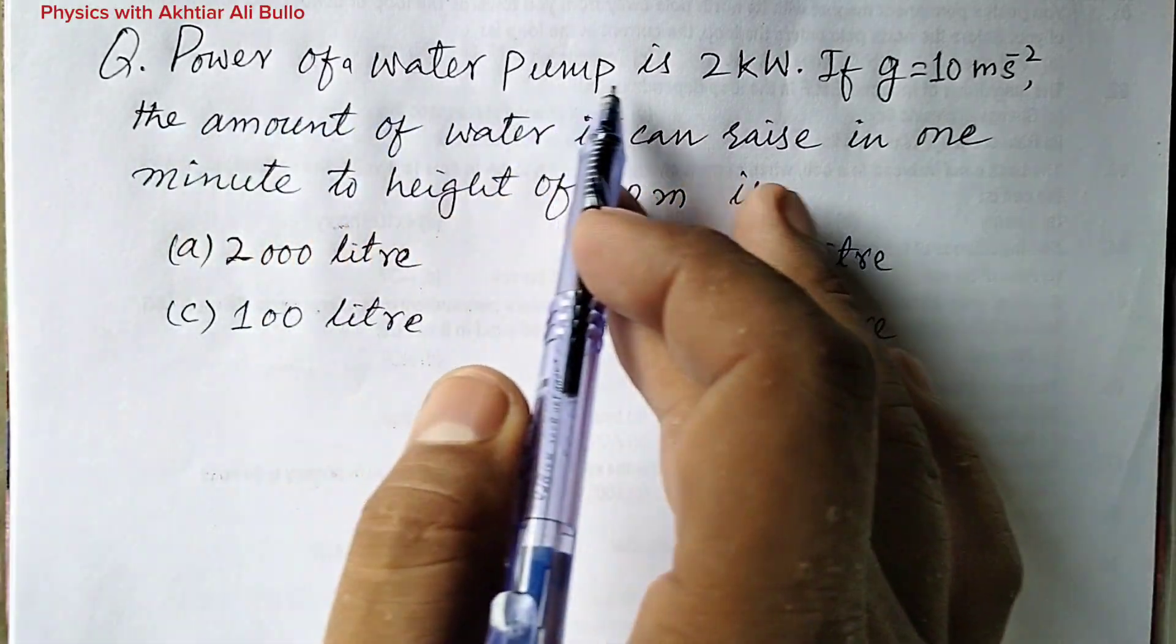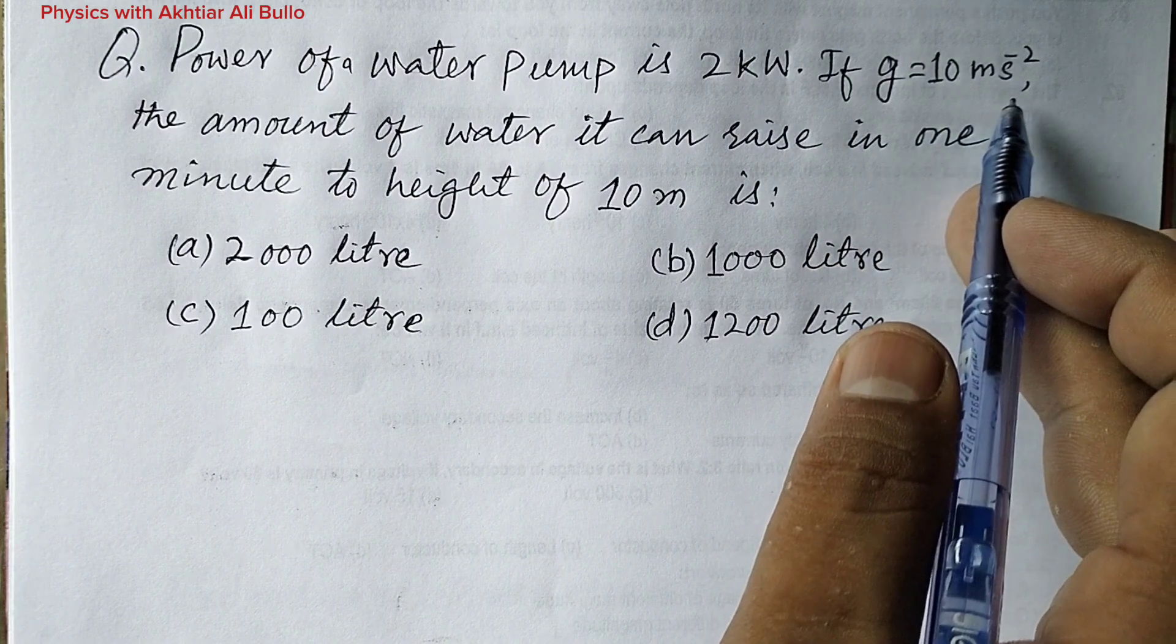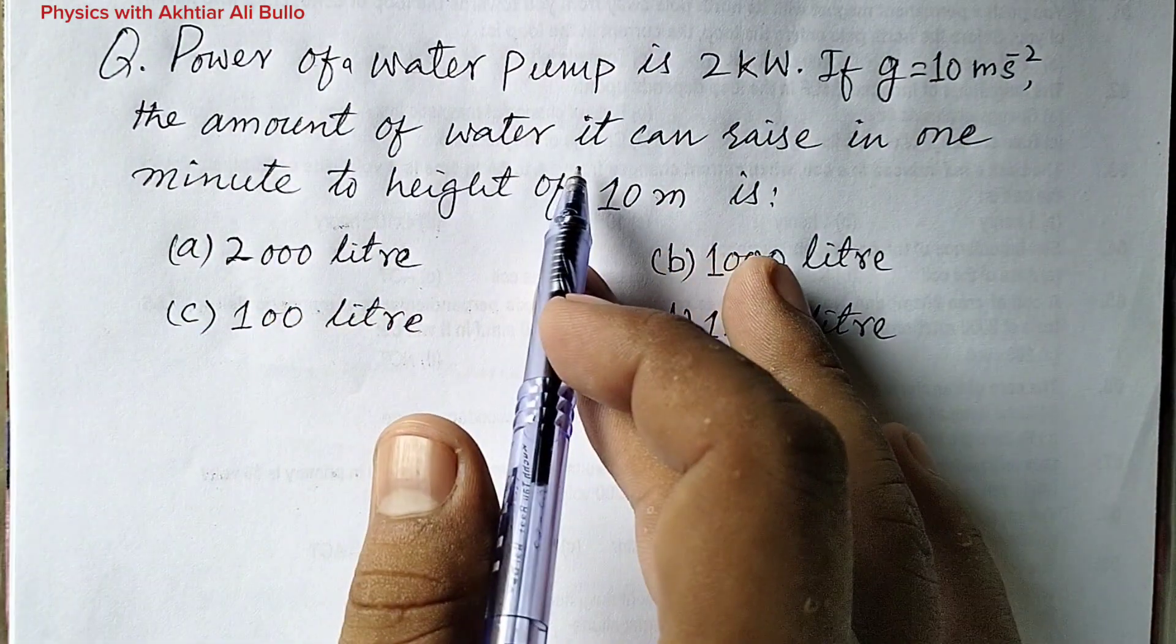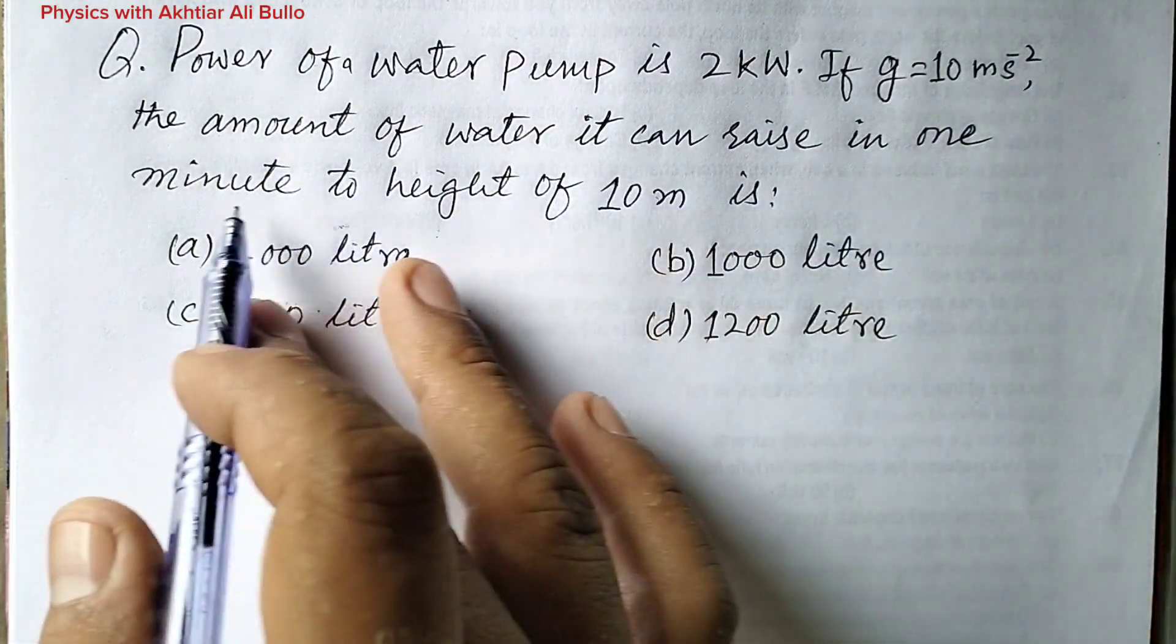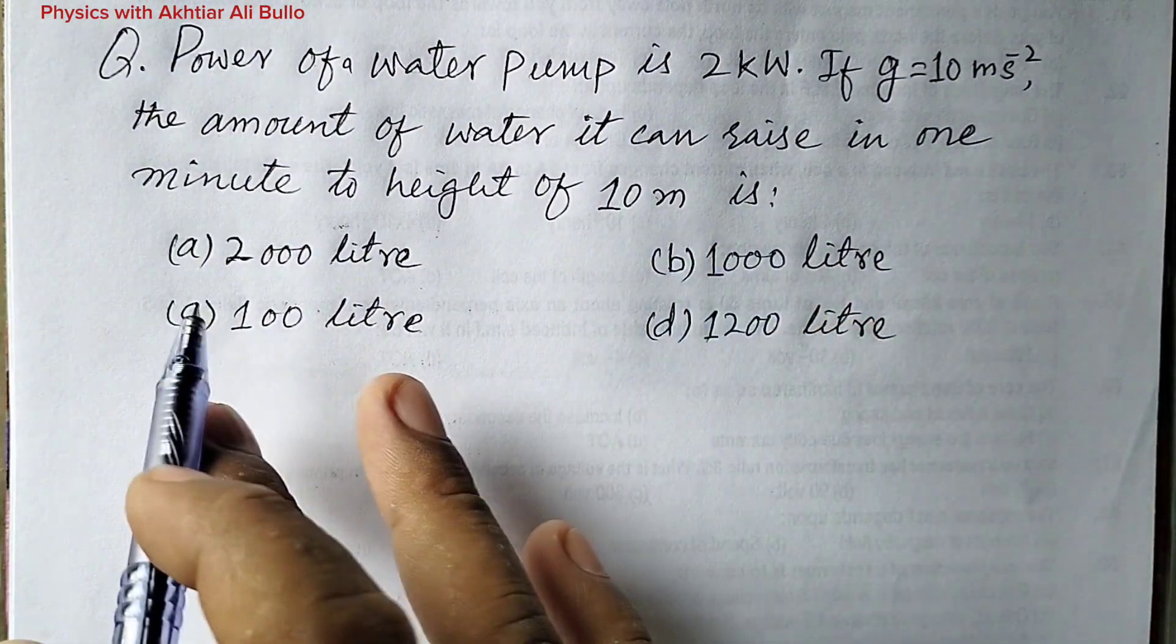The question is: power of a water pump is 2 kilowatts, if g is equal to 10 meter per second squared, the amount of water it can raise in 1 minute to height of 10 meter is: